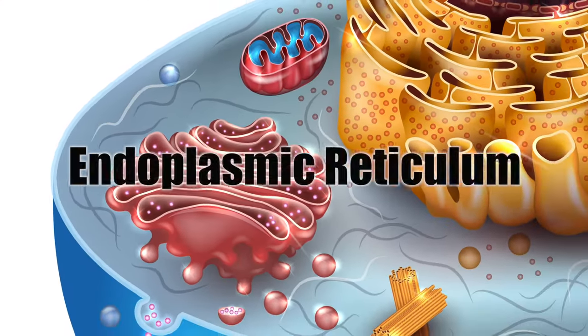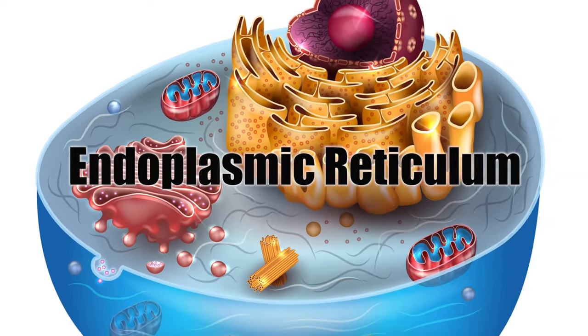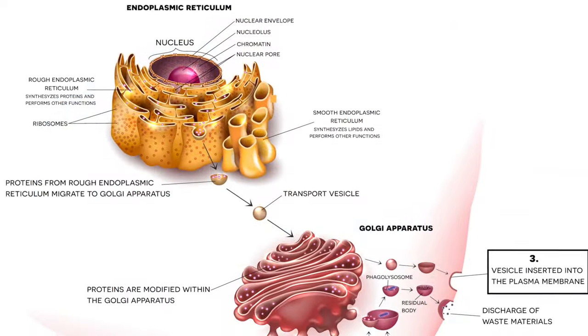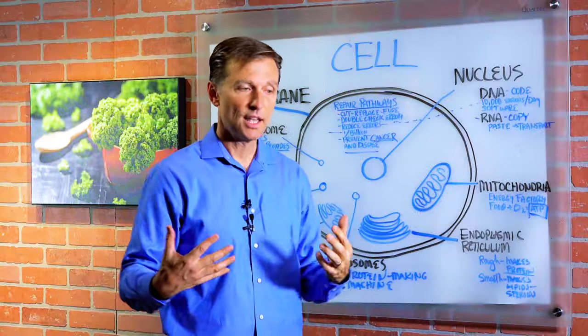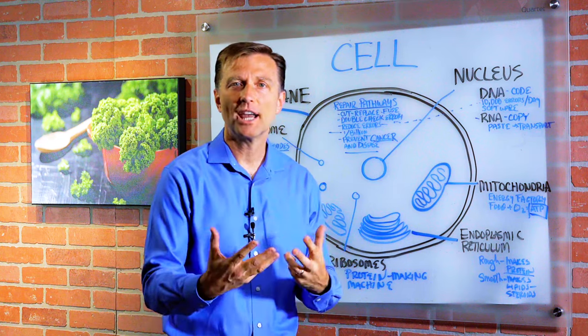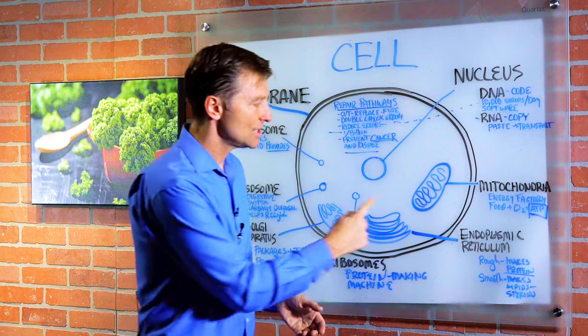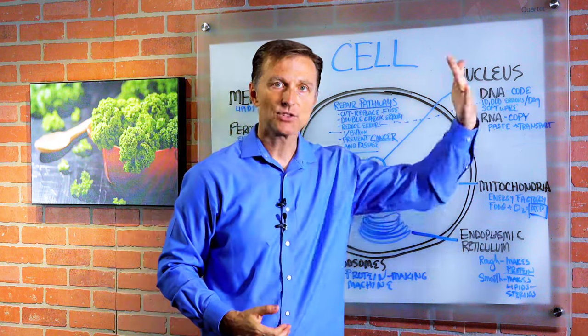And then you have something called the endoplasmic reticulum, which is the part of the cell that either makes protein if it's the rough part or makes lipids or steroids if it's the smooth part. Because a lot of your body tissue is composed of fat and protein, hair, nails, brain, nerve, et cetera. So this is one part of the assembly line in the manufacturing of body tissue.